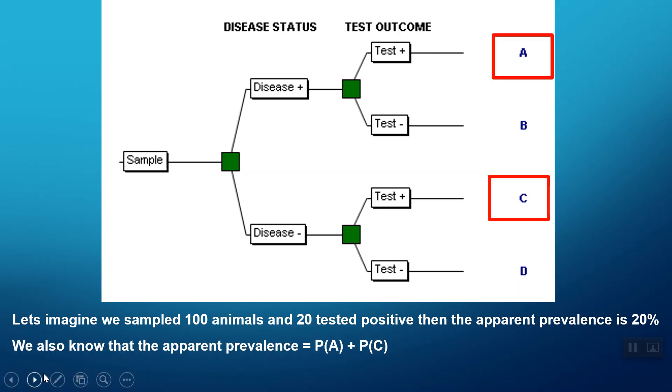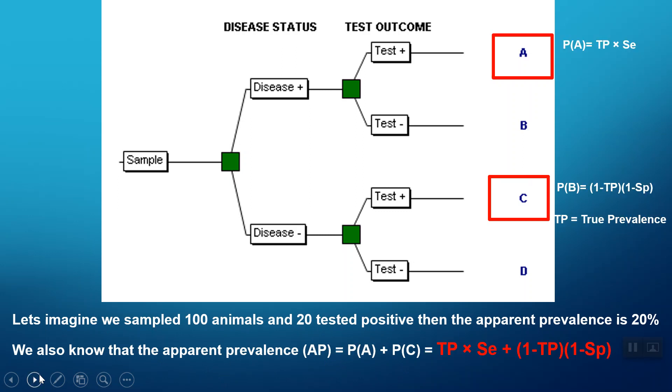Now, the only way in which we can get a test positive is around these two branches of the tree, so you're either A or you're C. Because of probability rules, that means my apparent prevalence equals the probability of A plus the probability of C. We know that the probability of A is the true prevalence, which is the probability it is diseased, multiplied by the sensitivity.